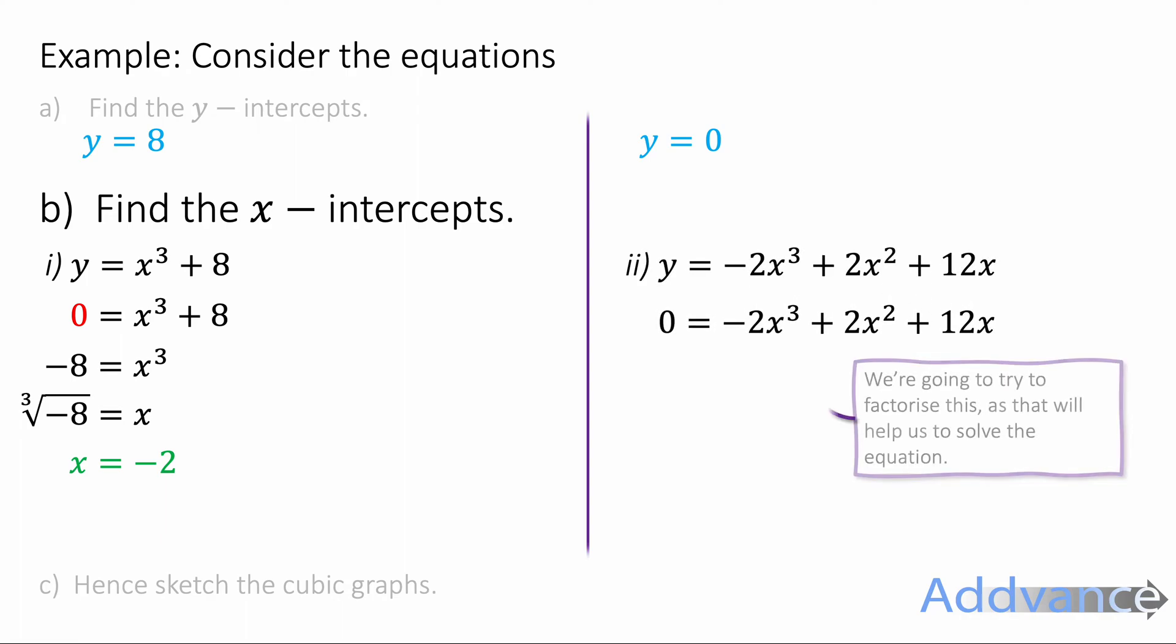For this other equation, we're going to substitute y = 0 into this equation. And this is definitely trickier to solve. Firstly, we're going to factorize the expression. We can factorize an x out of all these terms. And we get -2x × (x² - x - 6). Just take a moment to see what I did there. I factorized -2x out of all the terms. And that gave me what's on screen. -2x × (x² - x - 6).